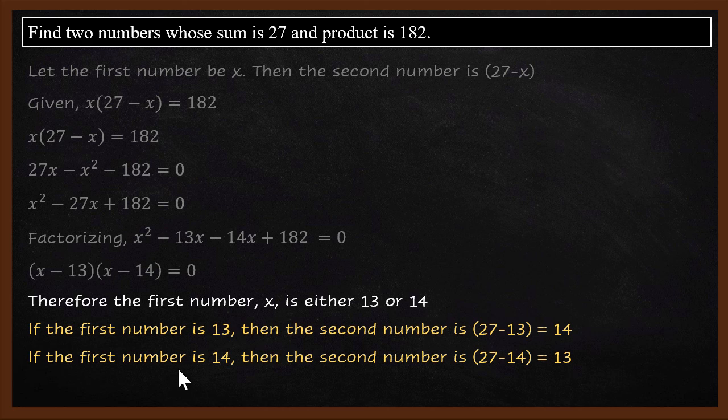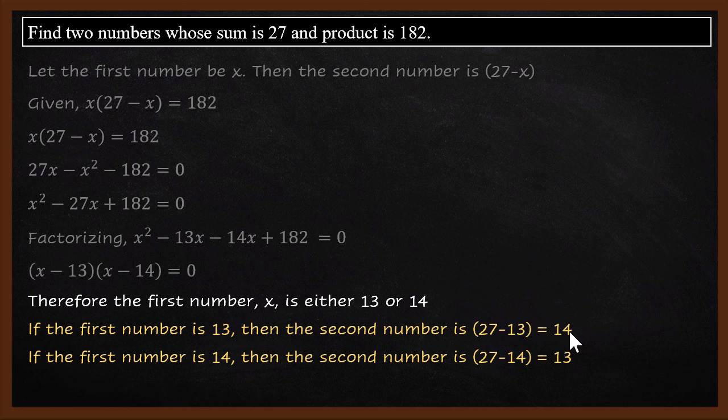If the first number is 14, then the second number is 27 minus 14 which makes it 13. So first number is 13 and second number is 14.